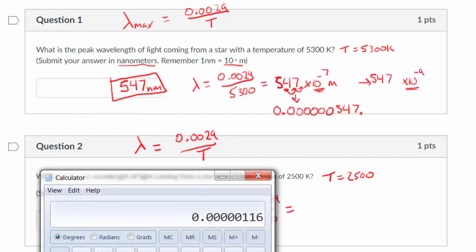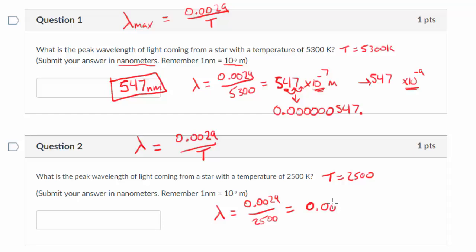So let me just write out this decimal. One, two, three, four, five zeros to the right of the decimal, and then 116. So this is 0.00000116. Now I have to figure out what this is in nanometers. So I'm going to move the decimal nine places to the right, because this is meters. So then it's going to be one, two, three, four, five, six, seven, eight, nine.